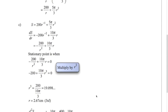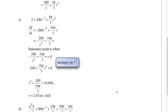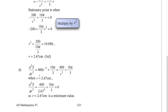A lot of people ask: is this going to give a maximum or a minimum? You need to check. Doing the second derivative and substituting r equals 2.67 gives a value greater than zero. The second derivative being greater than zero means we have a minimum value — so we've proved it. The value r equals 2.67 centimeters minimizes the surface area of the salt shaker.